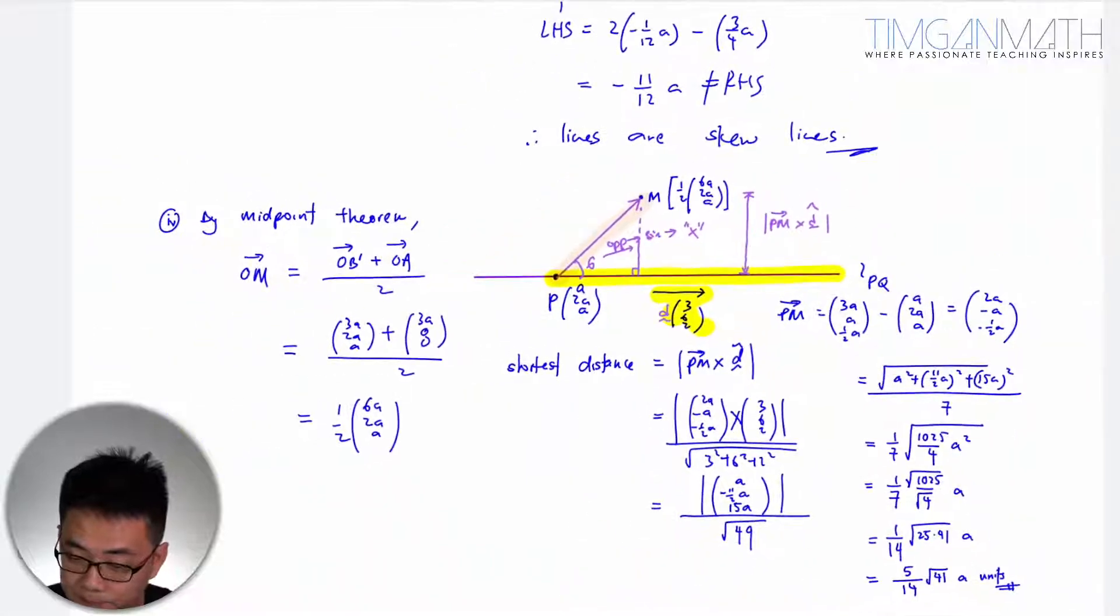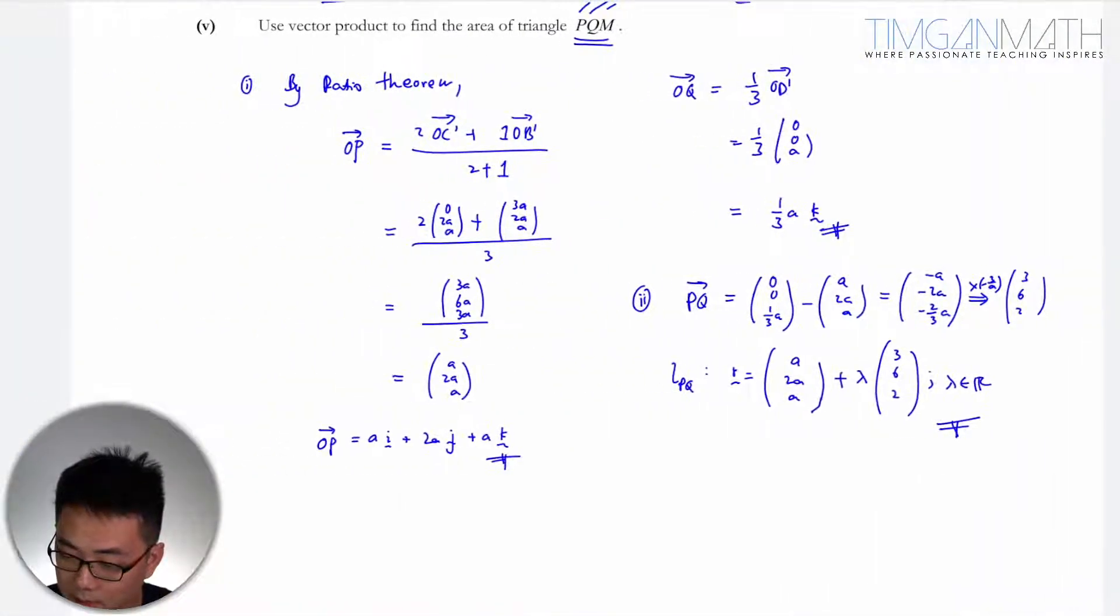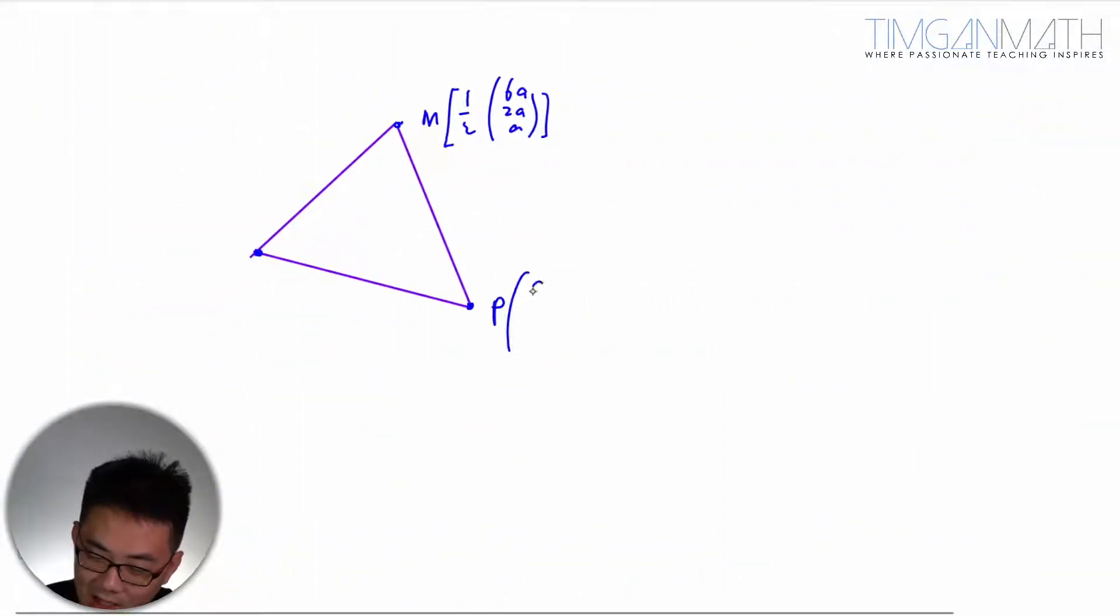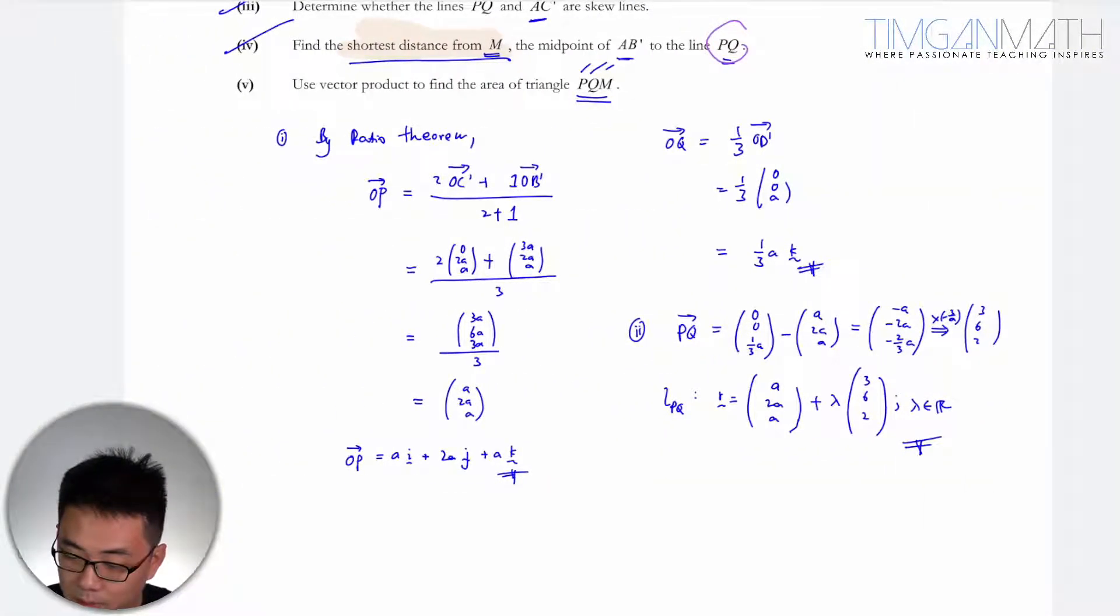Then we have got P. What's up P? P is actually... P is A, 2A, and A. So A, 2A, and A.